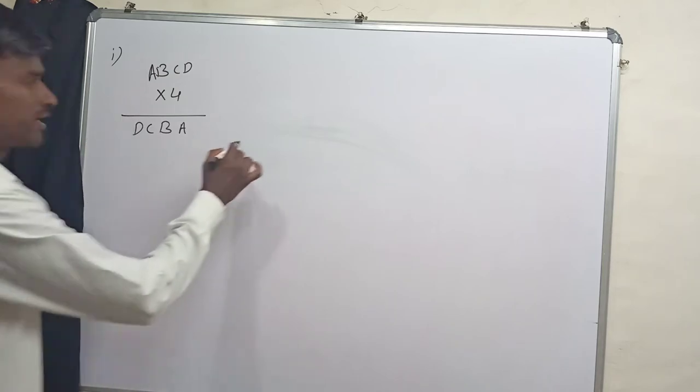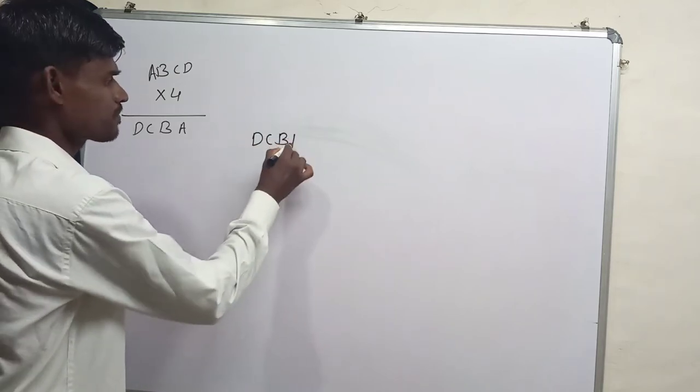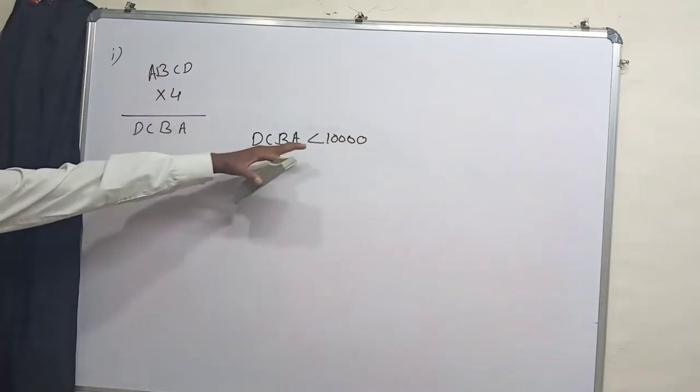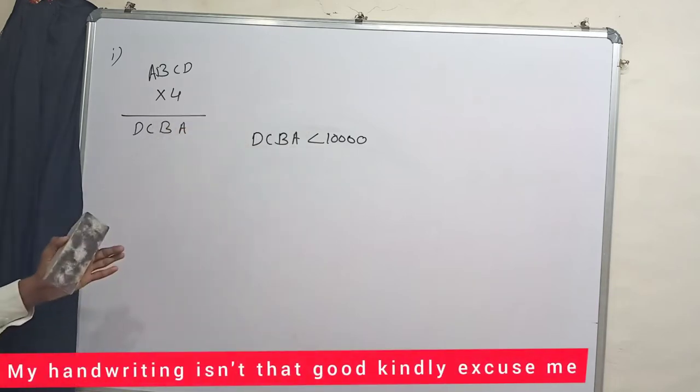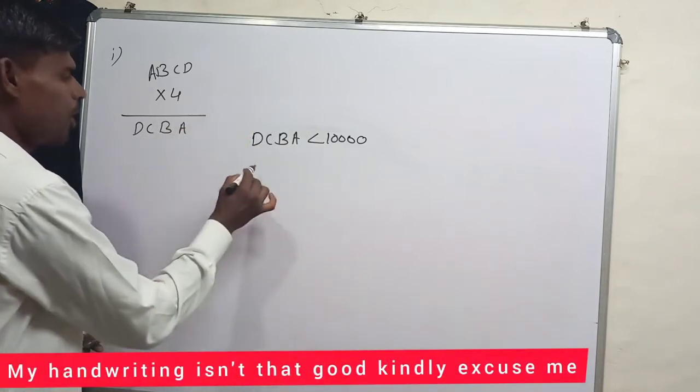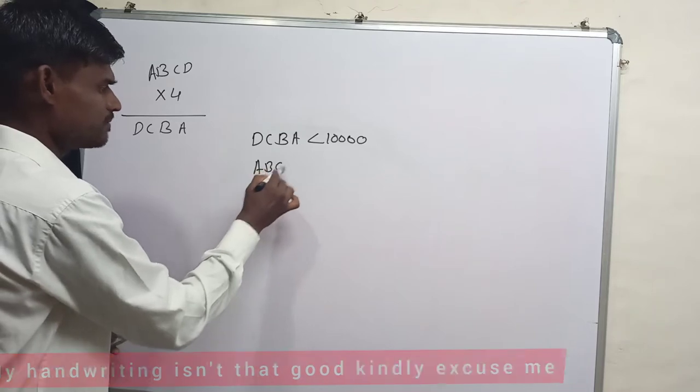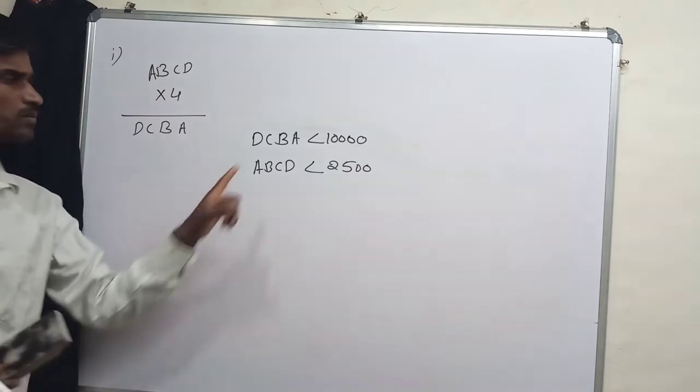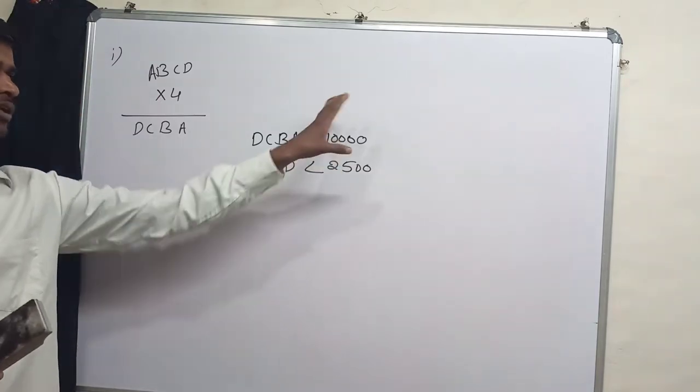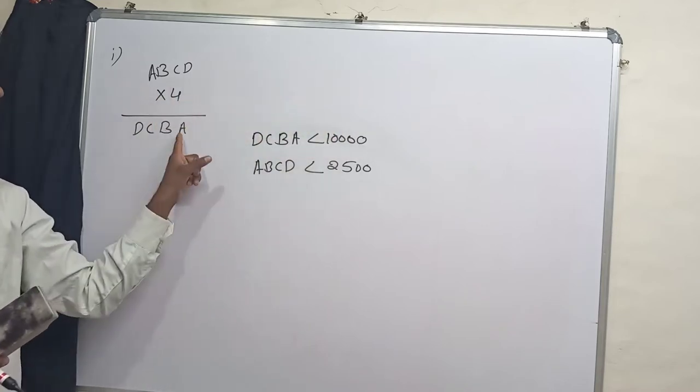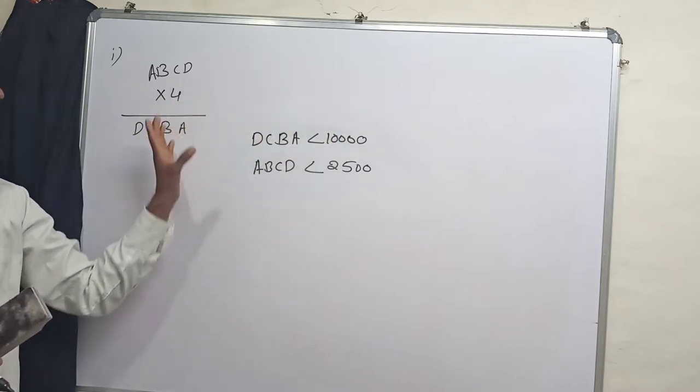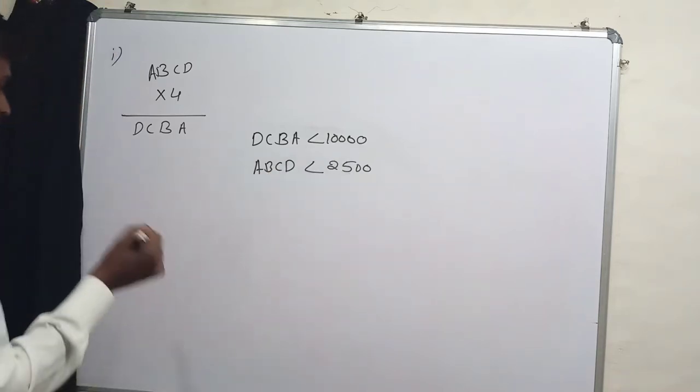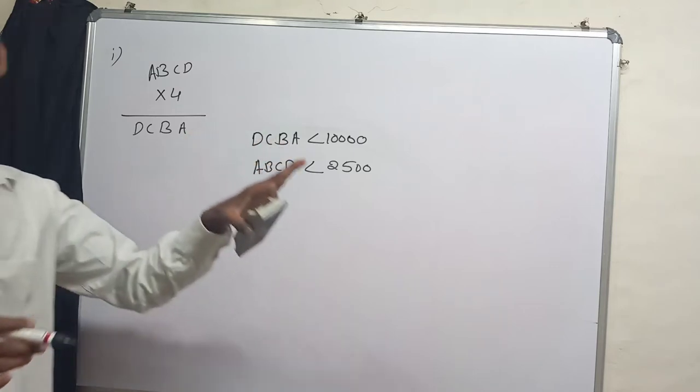By looking at this one we can say that DCBA is less than 10,000 because 10,000 is a five digit number so DCBA is less than 10,000. If DCBA is less than 10,000 obviously ABCD is less than 2500 because 2500 into 4 is a five digit number but here we have only a four digit number as a result. So ABCD is less than 2500. It clears that A can't be more than 2.